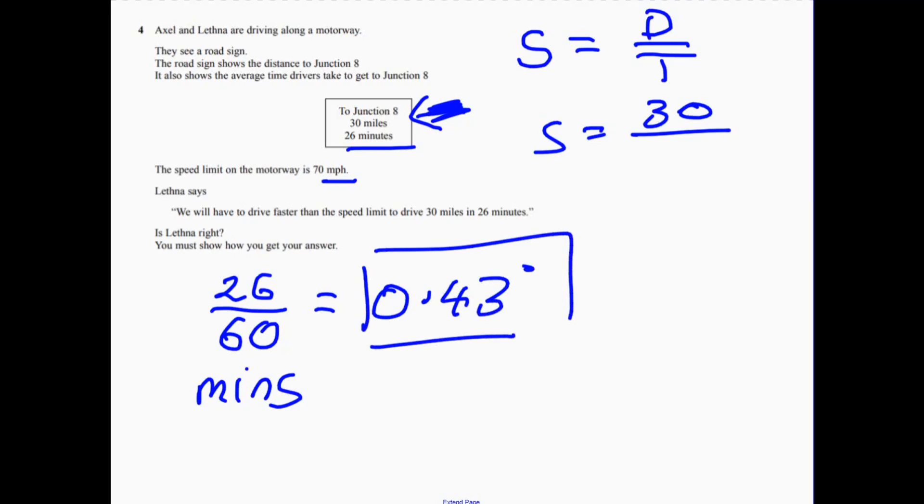Now, you can just hold that value in your calculator. And if we do 30 divided by that number, so 30 divide, and then using your answer button, and it equals... we're going to go at 69.23 miles per hour.